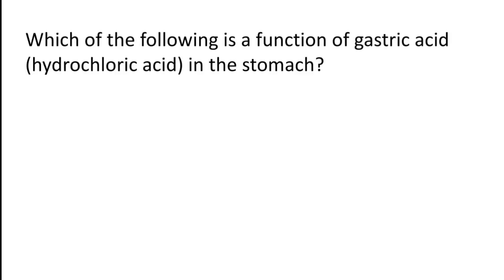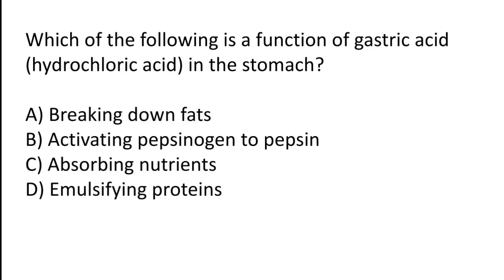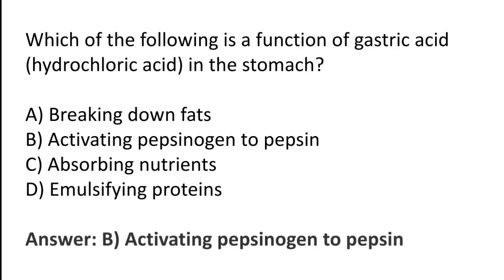Which of the following is a function of gastric acid — hydrochloric acid — in the stomach? Option A: Breaking down fats. Option B: Activating pepsinogen to pepsin. Option C: Absorbing nutrients. Option D: Emulsifying proteins. The correct answer is Option B — the function of gastric acid in the stomach is activating pepsinogen to pepsin.